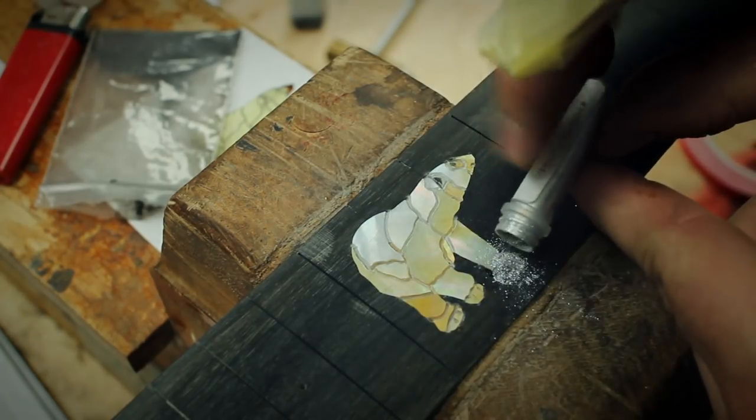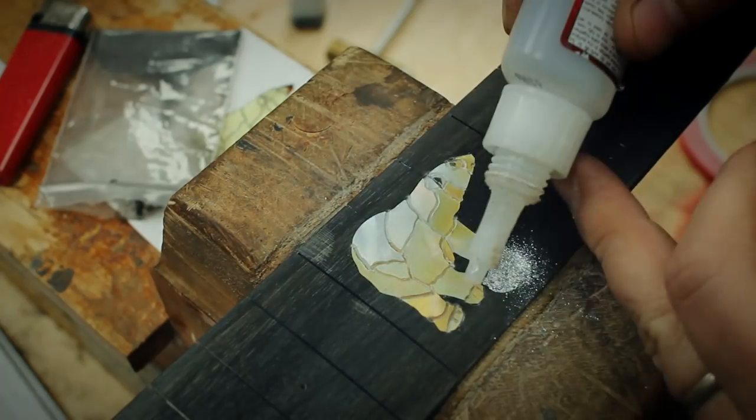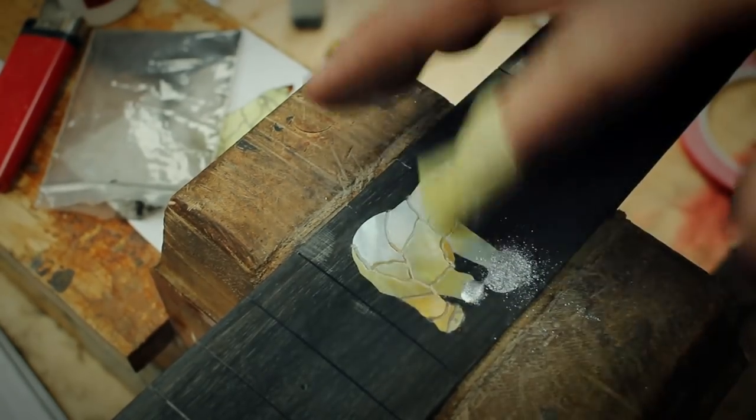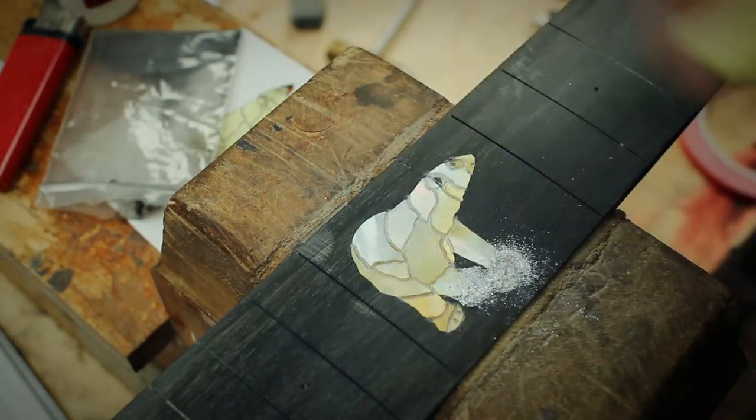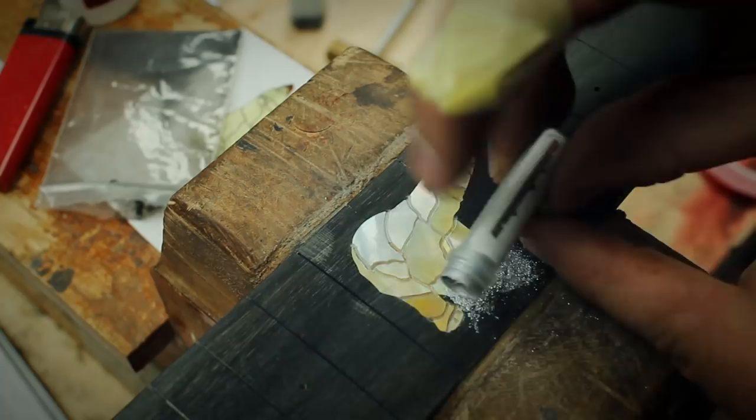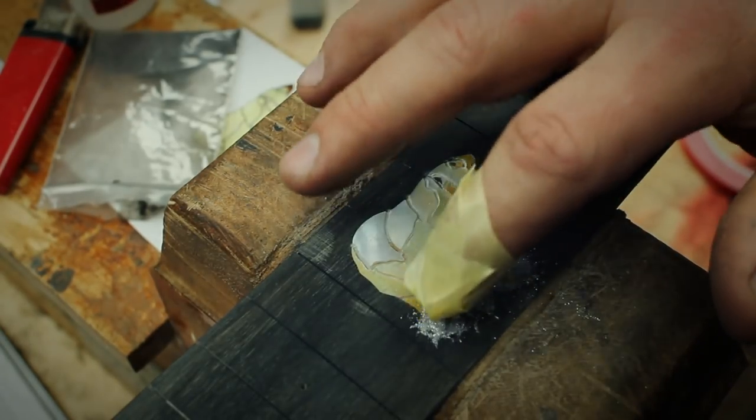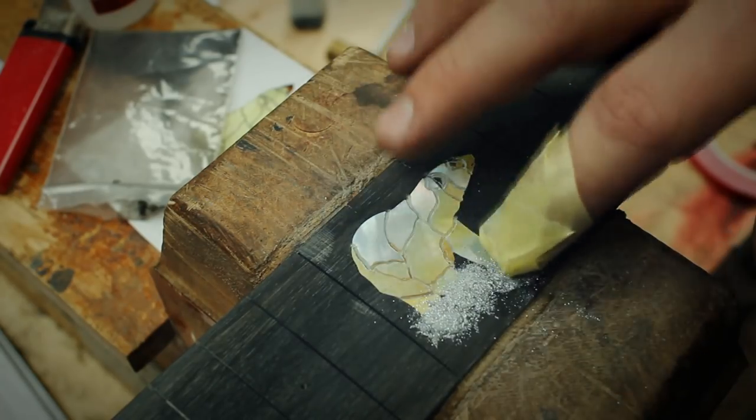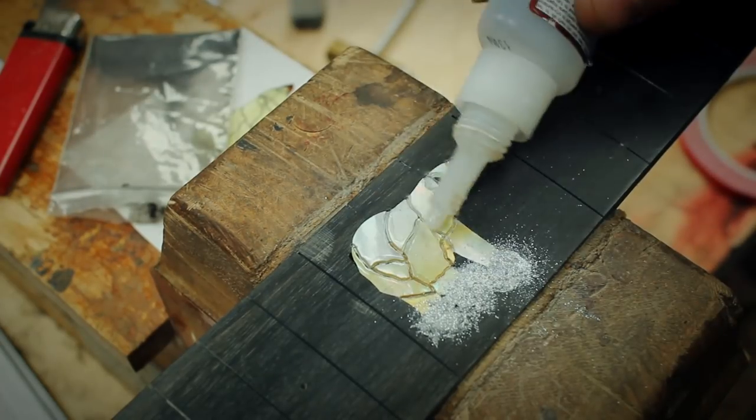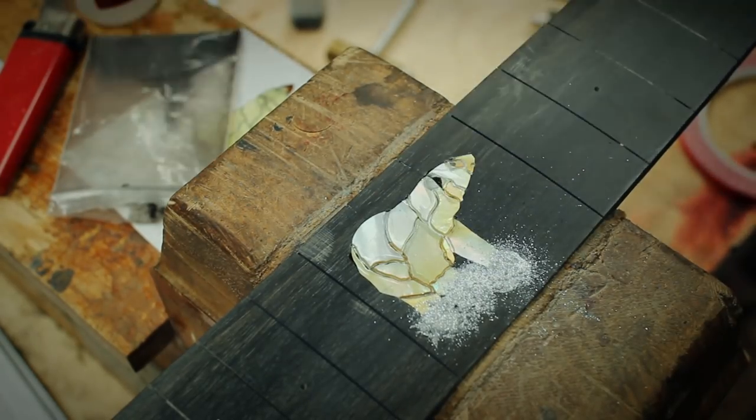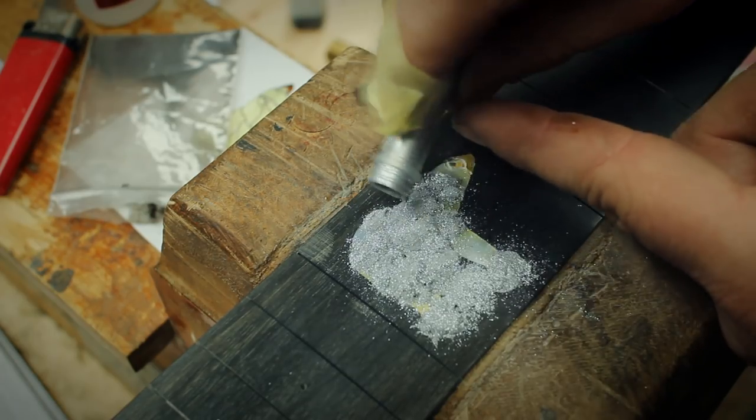Same process as before. We flood the cavity with superglue. The reason for doing the glue first is that if you put powder in and the glue doesn't penetrate all of the powder, you end up with uncured inlay underneath. And that is not good, because that might crumble. And once you've put the frets in, etc., you have problems that are difficult to sort out.